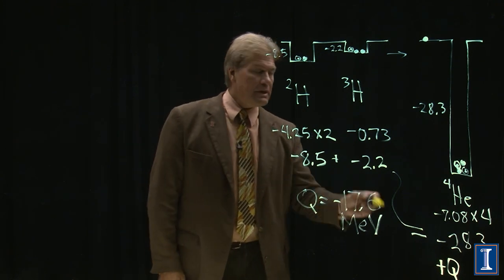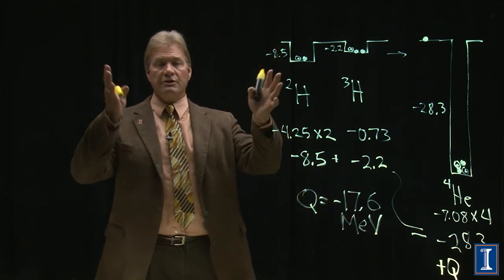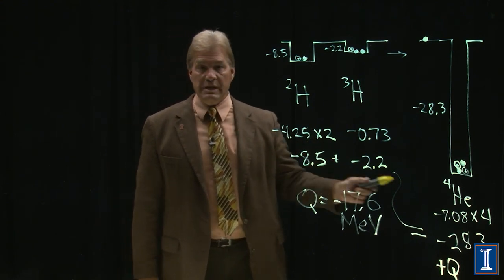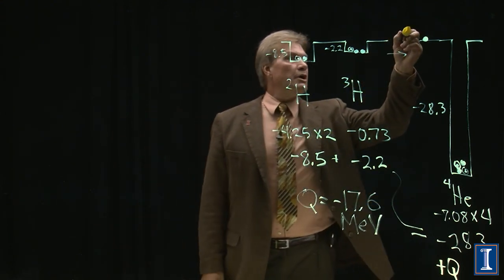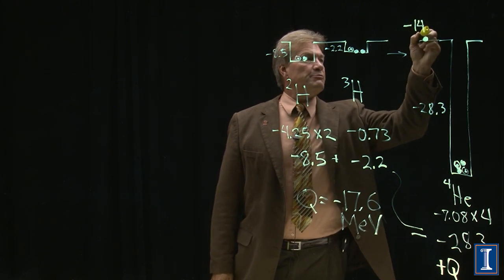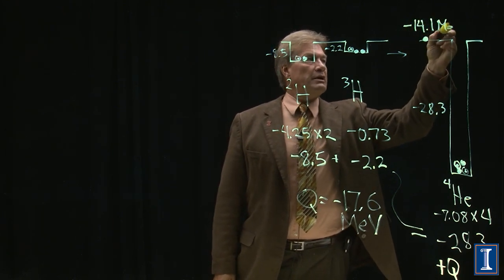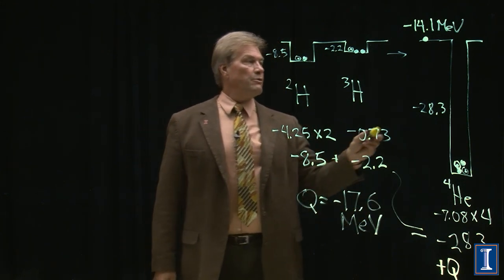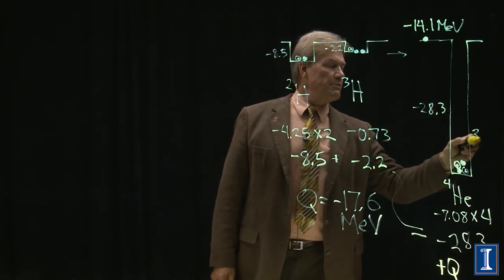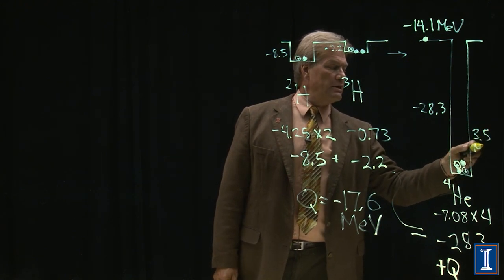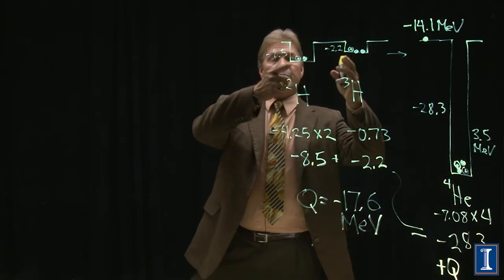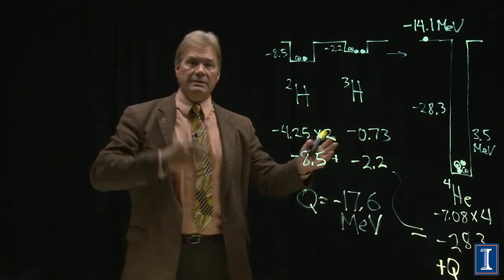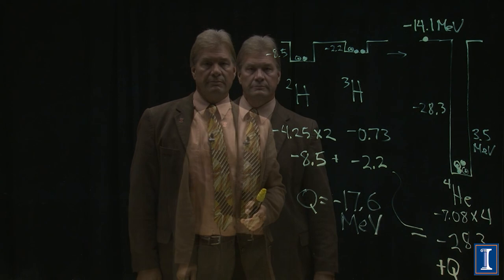This energy released isn't some magic fluid. This energy released is simply the speed of the products. This neutron carries away 14.1 of the MeV, and the helium nucleus takes away the rest at 3.5 MeV. These were barely moving by comparison, and these are moving really fast, and that's where the energy goes.